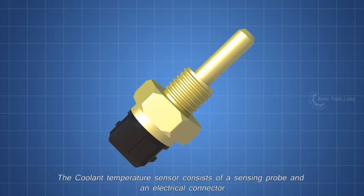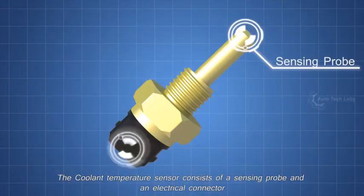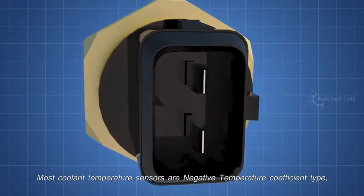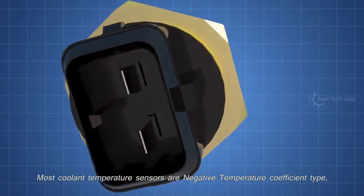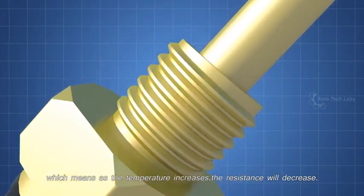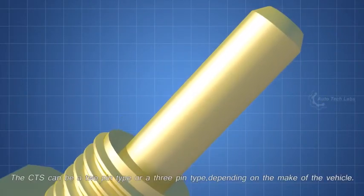The coolant temperature sensor consists of a sensing probe and an electrical connector. Most coolant temperature sensors are negative temperature coefficient type, which means as the temperature increases, the resistance will decrease. The CTS can be a 2 pin type or a 3 pin type, depending on the make of the vehicle.